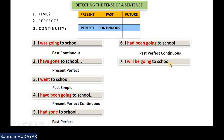Seventh example: 'I will be going to school.' Time — it is future, not past, not present. Perfect — no, there is no perfect. Continuous — yes, we have continuity. The tense of the sentence is future continuous. Imagine you wrote this sentence in your own language and asked these three questions and found out you should make it in the future continuous.